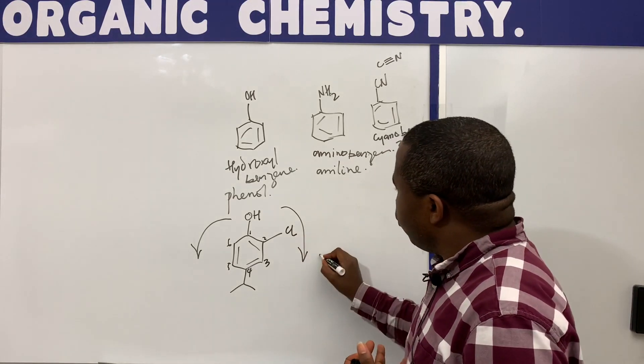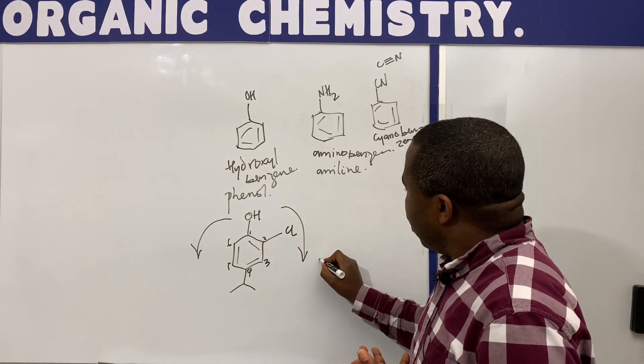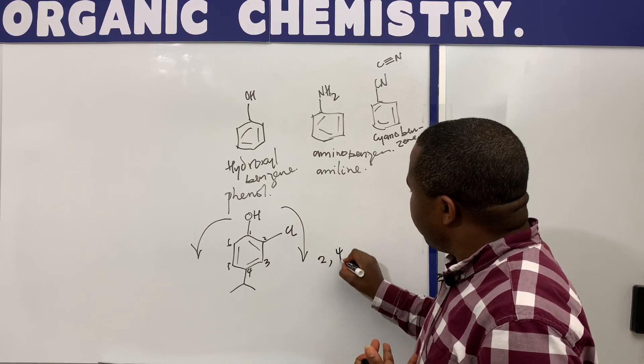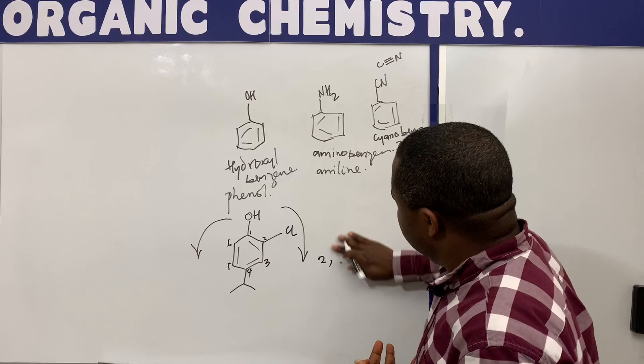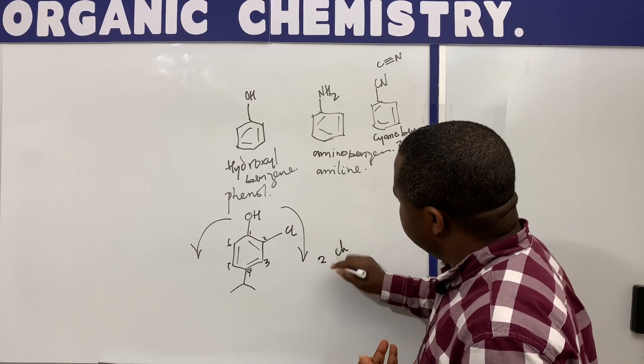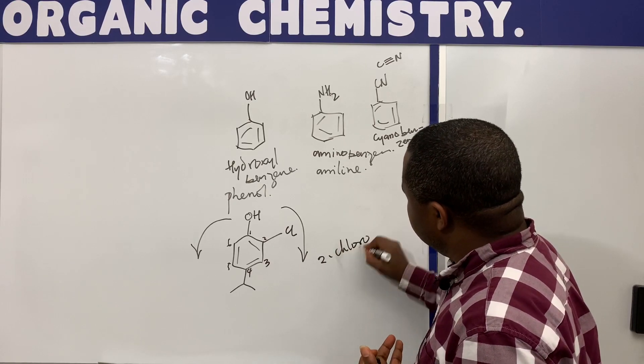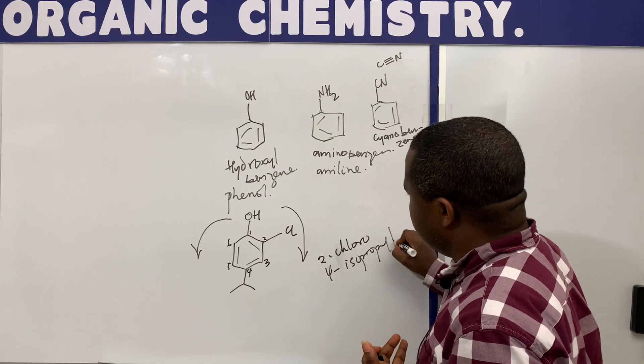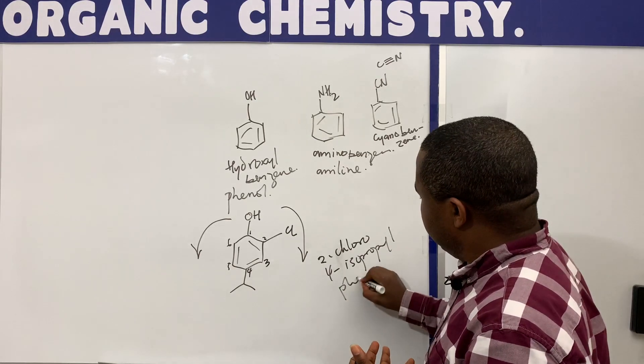And that will mean going this way, it will leave us with two-chloro and four-isopropyl-phenol, right?